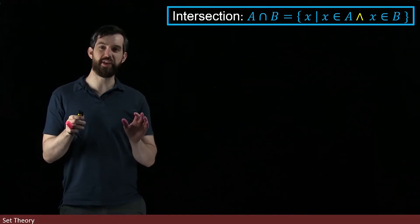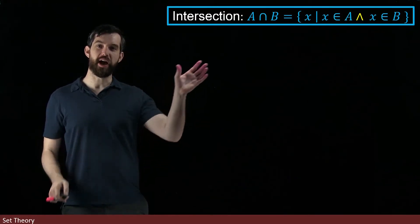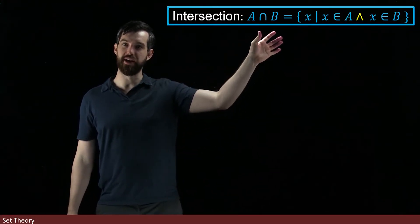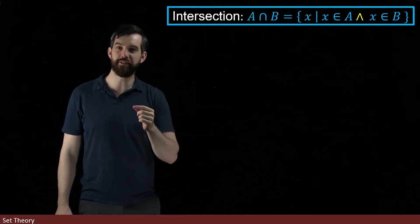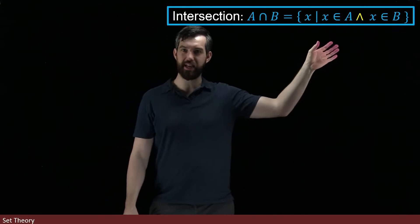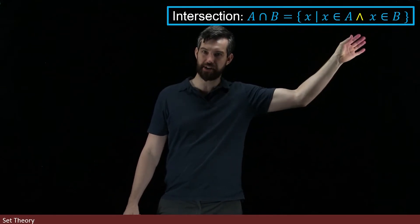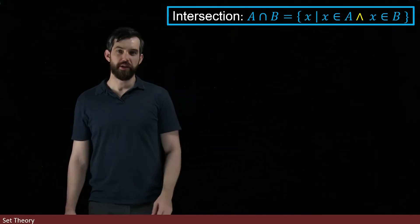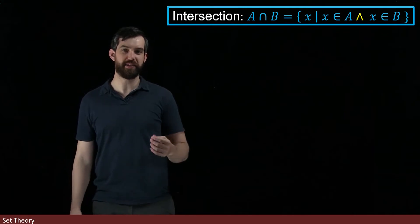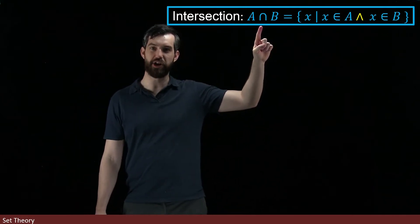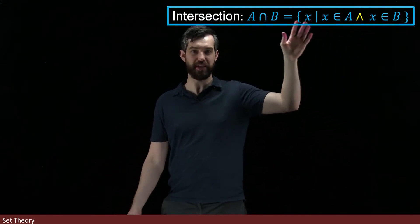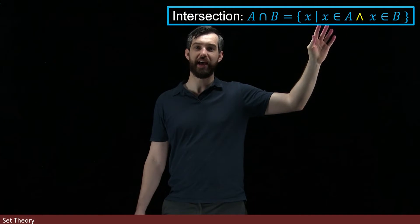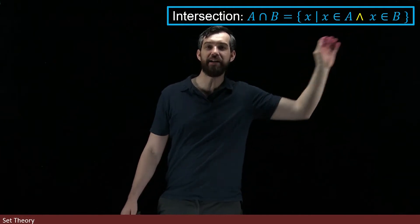Now we're going to investigate the idea of the intersection between two different sets. Instead of it being a disjunctive property, it has a conjunctive here — it is an AND statement. You can remember this by the similarity between the intersection symbol, which faces down, and the AND symbol, which looks a little bit like an A. So the intersection is going to have the X in A AND the X in B.